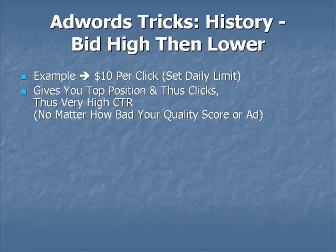Set your bid at three dollars, which is high. What this is going to do is give you top position immediately because you're bidding a lot higher than anybody else. When a campaign first starts out, Google doesn't have a quality score to go by — they don't have history, they don't have relevancy — so they just give you the top position. It's kind of like a grace period; they will give you a good position just based on your bid for the first couple of days.